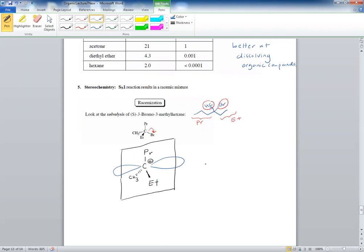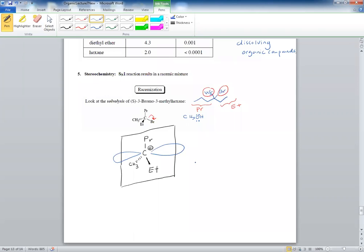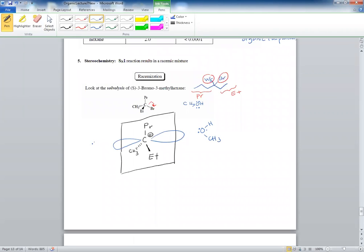What happens here is that, let's say in this case, our nucleophile is methanol. Then the methanol has two choices of attack. It can attack from the front or it can attack from the back.